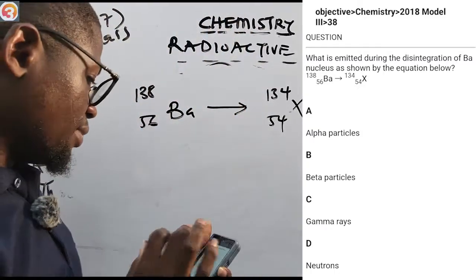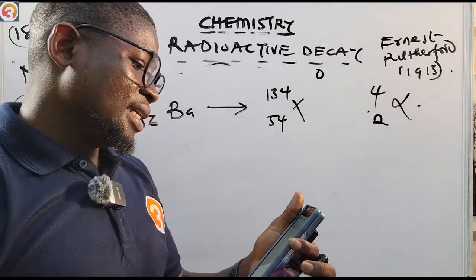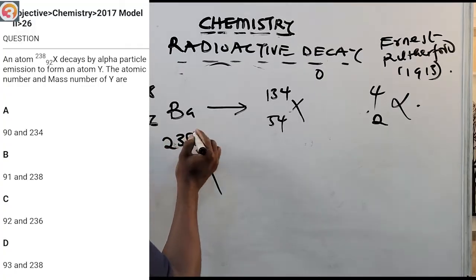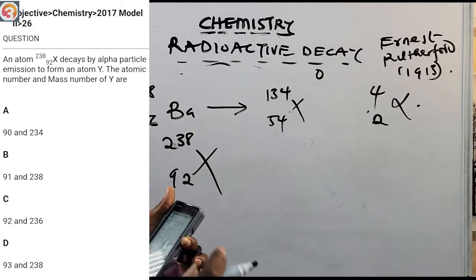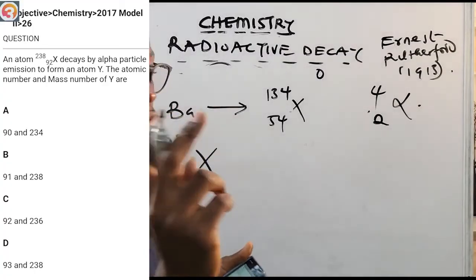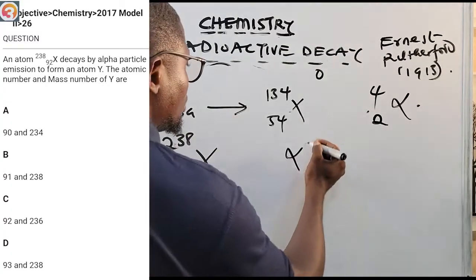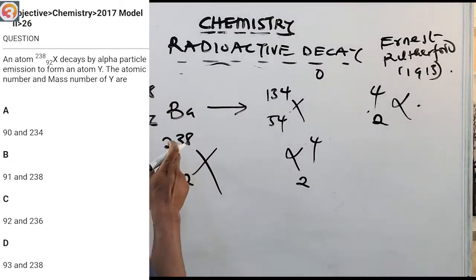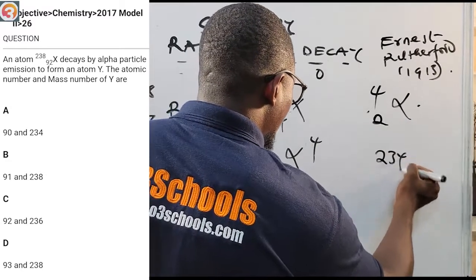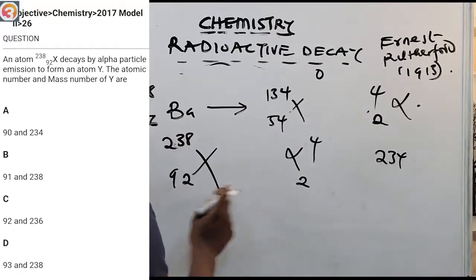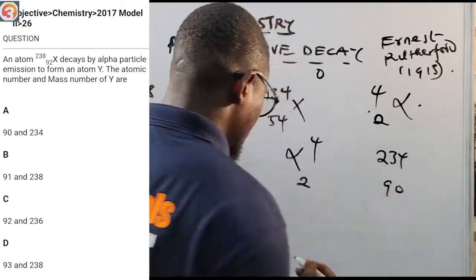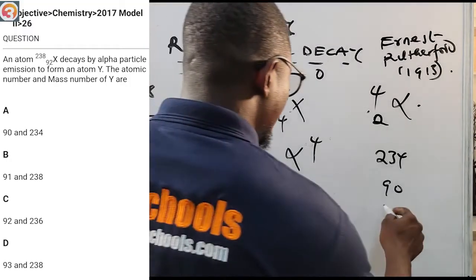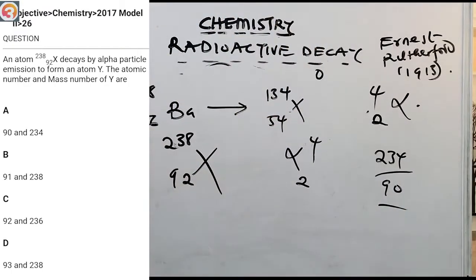2017 Question 26: Atom X, ²³⁸₉₂, decays by alpha particle emission to form atom Y. For alpha decay, we subtract 4 from the mass: 238 − 4 = 234. We subtract 2 from the charge: 92 − 2 = 90. So atom Y has atomic number 90 and mass number 234. The correct answer is option A.